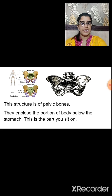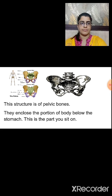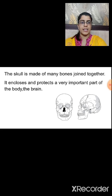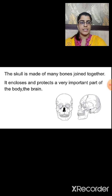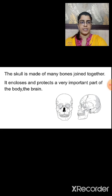This image represents the pelvic bone. The pelvic bone encloses the portion of the body below the stomach — it is located below the stomach, and this is the part you sit on. The skull is made up of many bones joined together, and these bones are fixed bones. The skull encloses and protects a very important part of the body — the brain. So the skull helps in the protection of our brain.